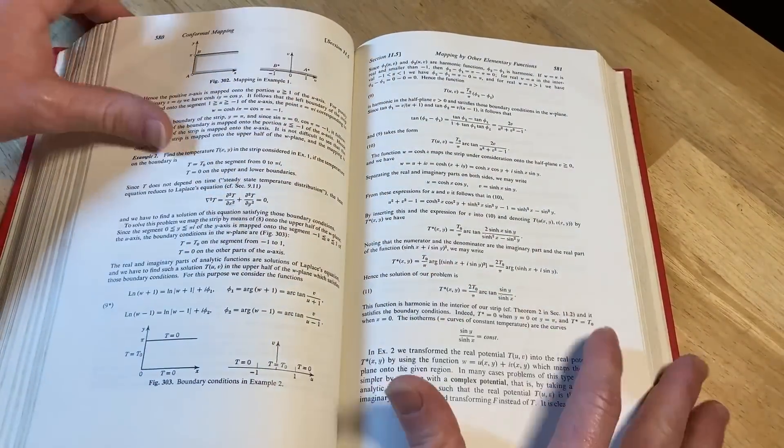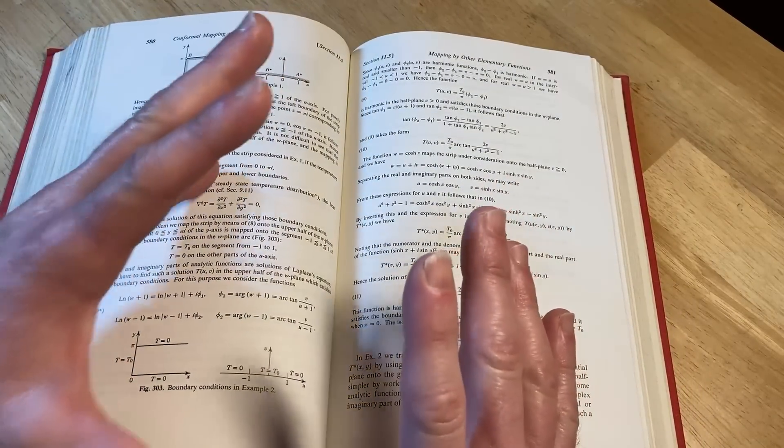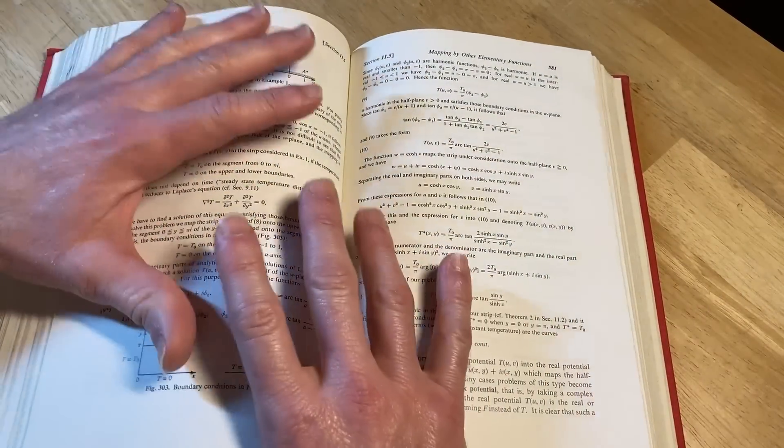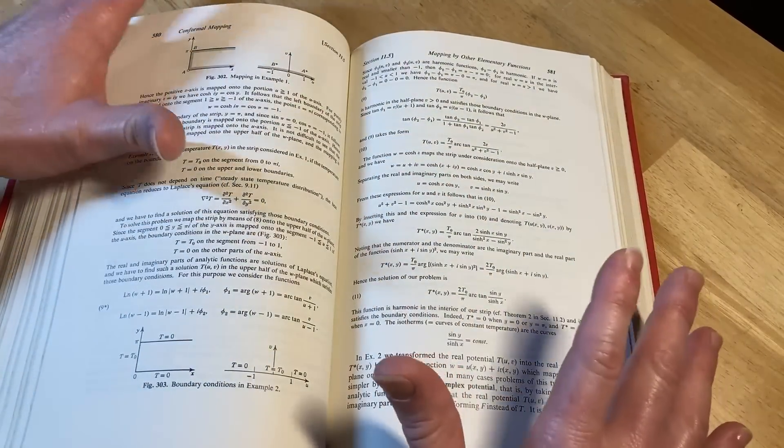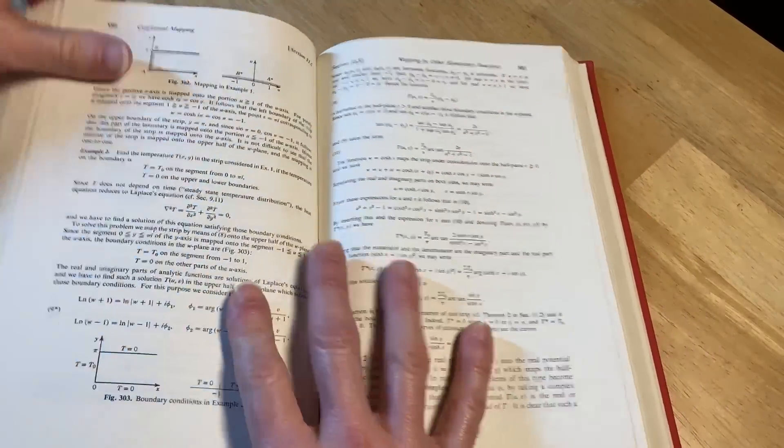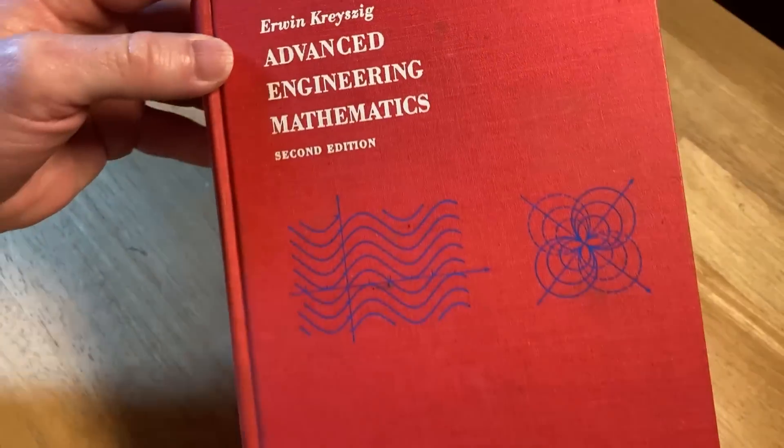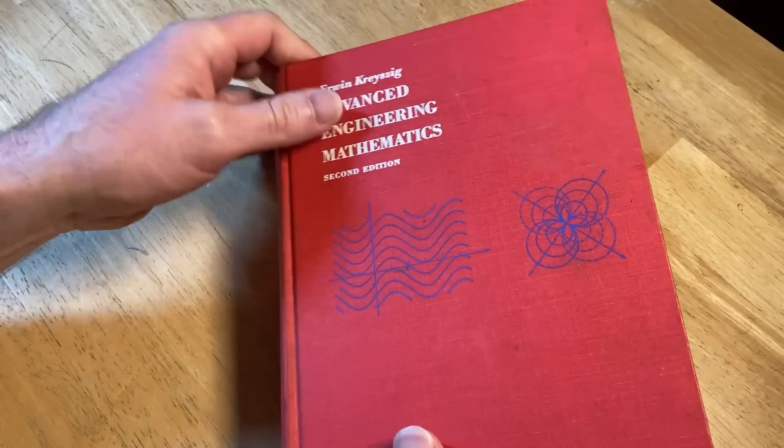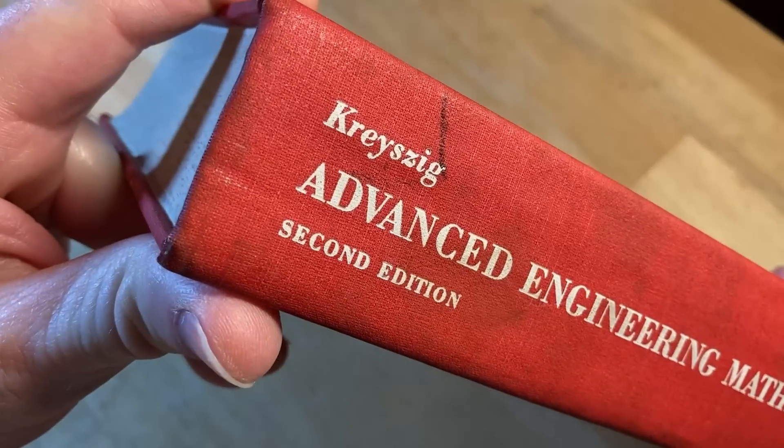Instead, this book gives you an overview of various areas of mathematics. It's kind of like one math book to rule them all because it's a math book on advanced engineering mathematics. It's basically an applied math book with tons of topics, written by a man named Erwin Kreysig.